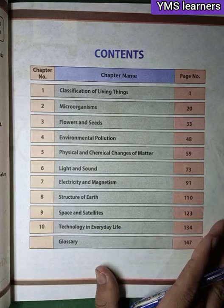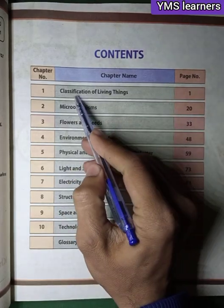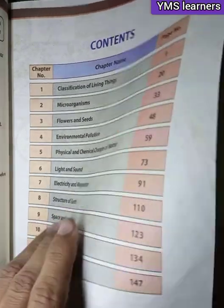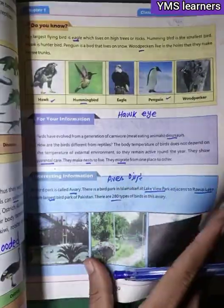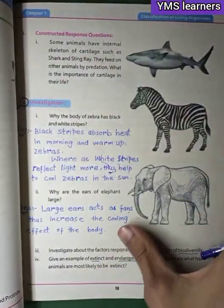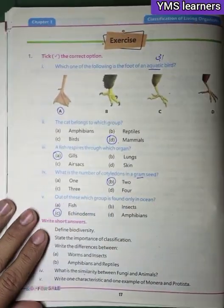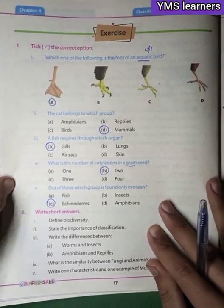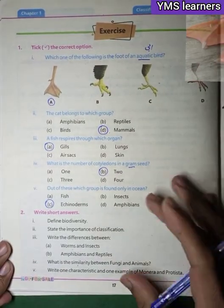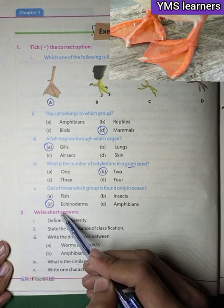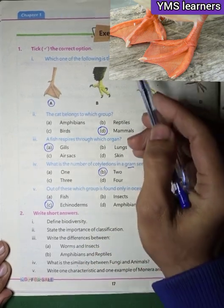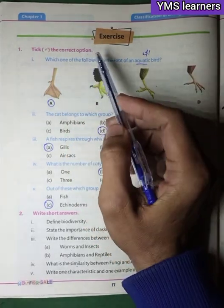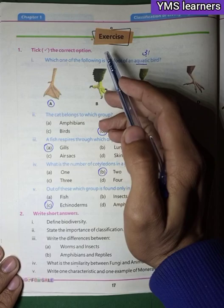Now let's go to Chapter One: Classification of Living Things. We turn to page 17 for the exercise. We will now go through the exercise questions for Chapter One. The first section is 'Take the Correct Option' — multiple choice questions.